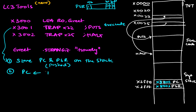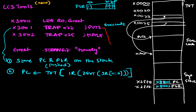The second step is we look up the trap vector table using the instruction register. We zero-extend the 8-bit trap vector number from IR bits 11 through 0 and look that up in the TVT. The effect of these two steps is that the PC finds itself pointing to the service routine code — it executes whatever code is there, and that code ends with a special RTI instruction.